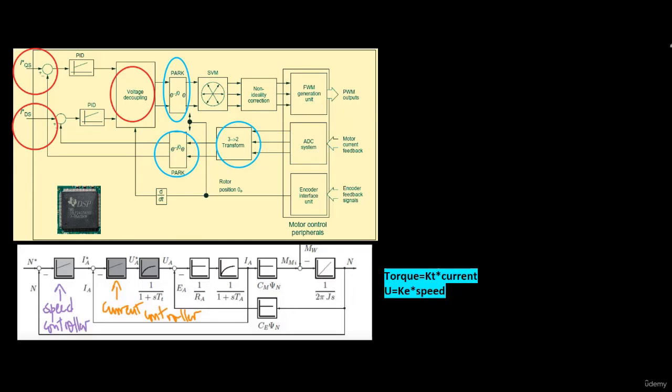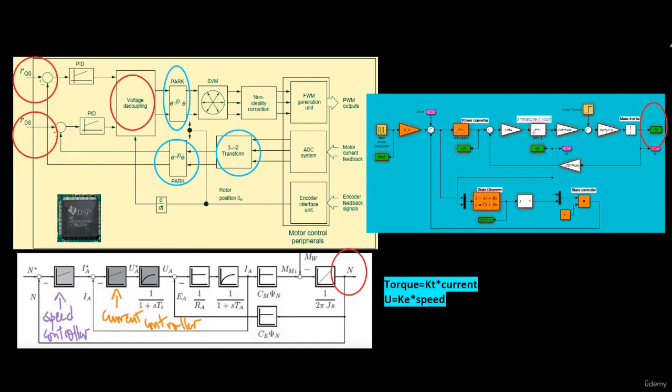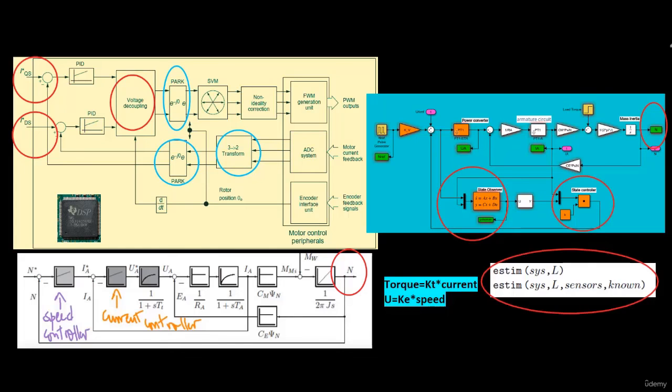Often, due to technological circumstances or cost reasons, the speed cannot be measured, but the machine still needs to be speed controlled. Thus, the state observer must be designed to estimate the speed that is no longer measured. After attending this course, you will be able to design all this.